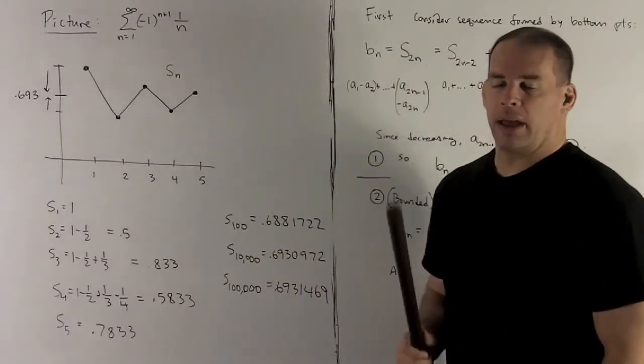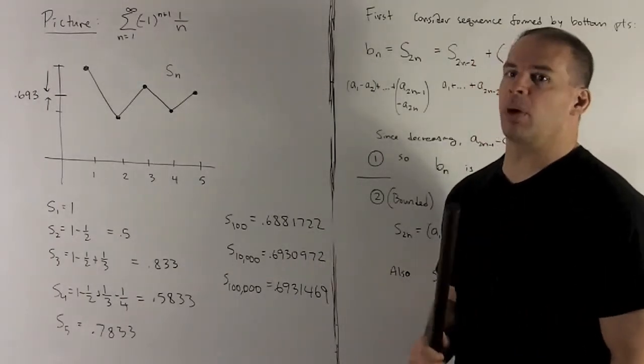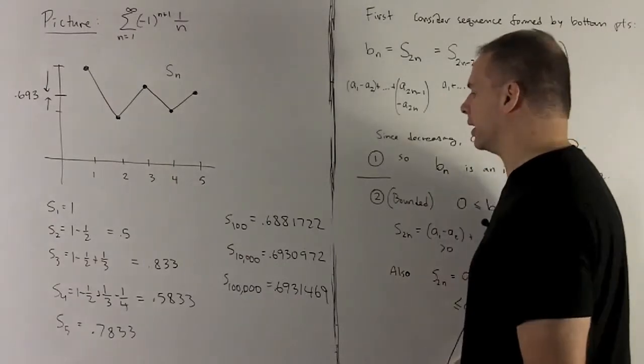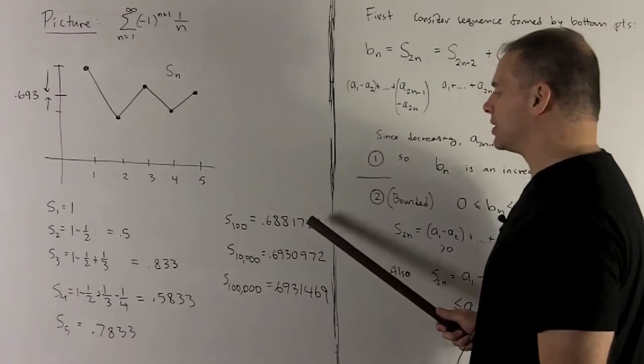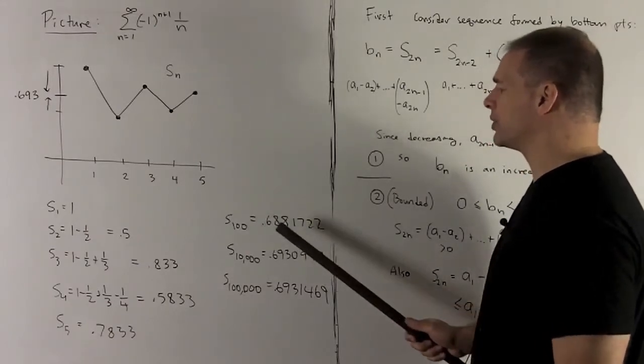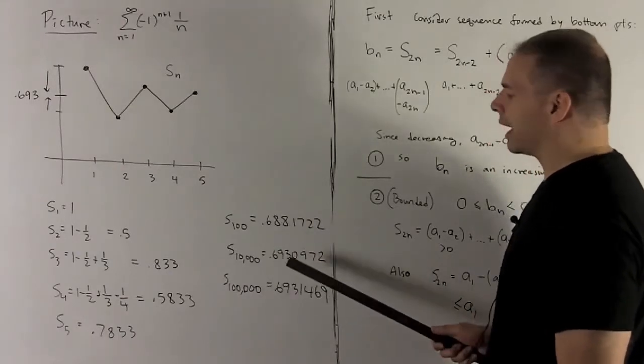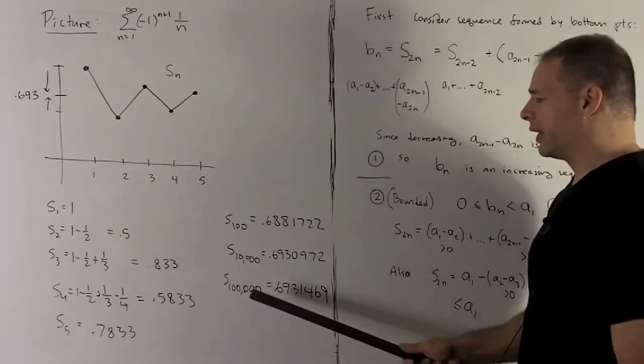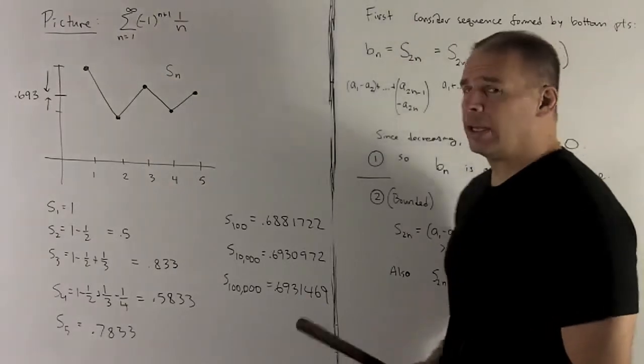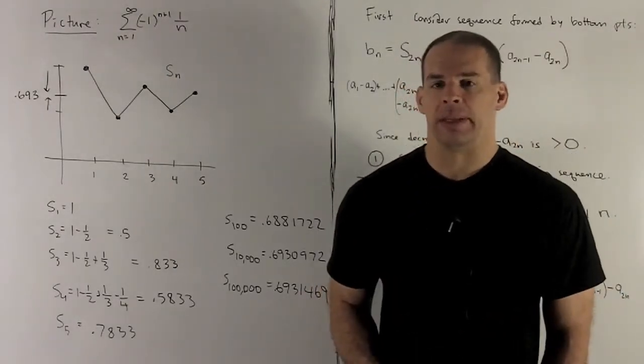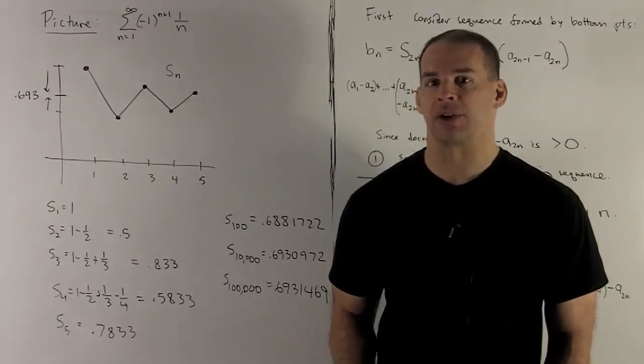But let's take a look at how slow this thing gets there. If I take 100 terms, and I go to the computer to do this, light programming, but you don't want to do it with a calculator unless you've got a good calculator. With 100 terms, 0.6881722, I'm not even nailing down the hundredth spot. If I go to 10,000, I get 0.6930972. And if I go to 1 million, 0.6931469. Probably a little bit later, we'll talk about how you tell whether you're close to your sum or not, depending on what kind of accuracy you're interested in.